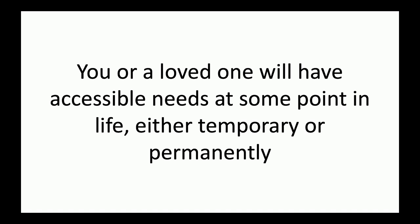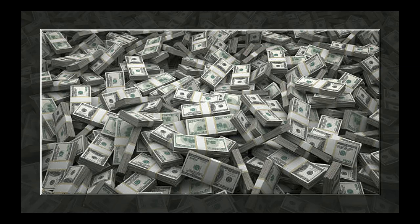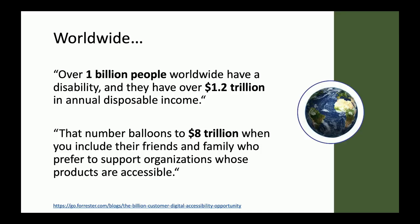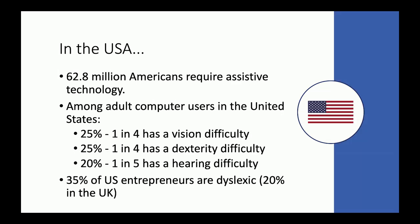Still not convinced? There's money in this. Over a billion people with 1.2 trillion dollars of disposable income have accessible needs, and when you incorporate their loved ones that goes up to 8 trillion. If you're not motivated by doing the right thing, at least do it for the money.